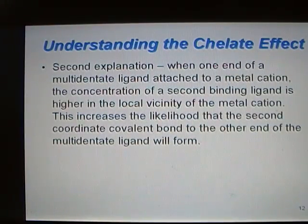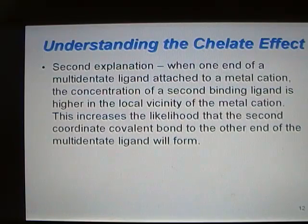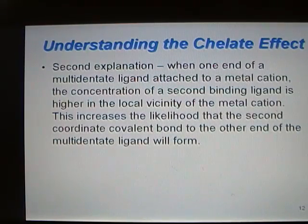There is a second explanation for the chelate effect as well. When one end of the multidentate ligand attaches to the metal cation, the other end is just hanging out there — but it's very close to another coordination spot on the metal cation. This increases the probability that the bidentate ligand will bond two times quickly to the metal cation, forming a stable compound.